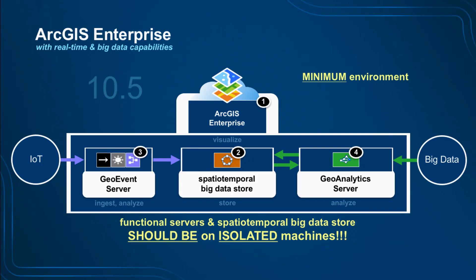A minimum environment for real-time and big data typically consists of a four-machine setup. For development or proof of concept you can put all on one machine, but for production you should isolate them. GeoEvent Server is very CPU and RAM intensive depending on geofences and spatial analysis. GeoAnalytics is also CPU and RAM intensive. If you put them on the same machine, a GeoAnalytics job taking four or five minutes will completely contend for CPUs and RAM, causing you to fall back on how much GeoEvent Server can stream in.